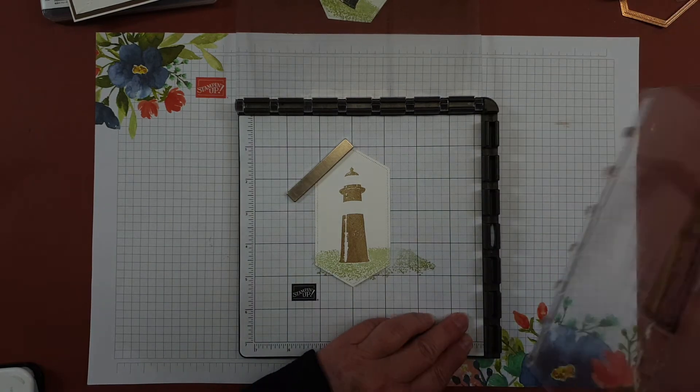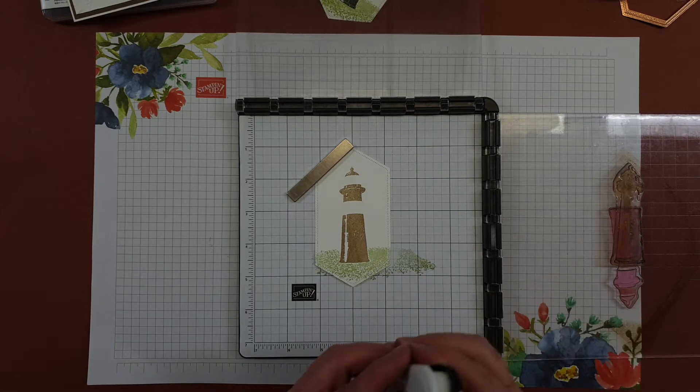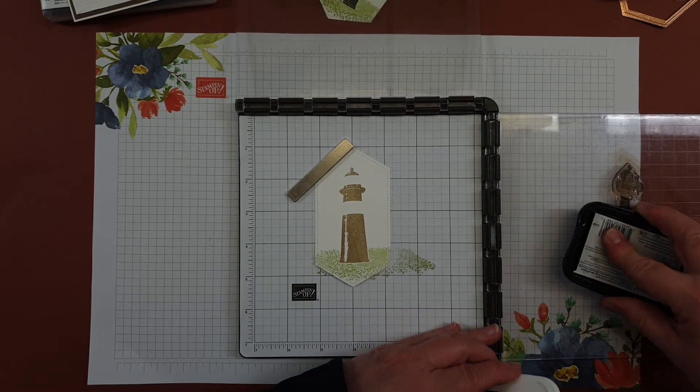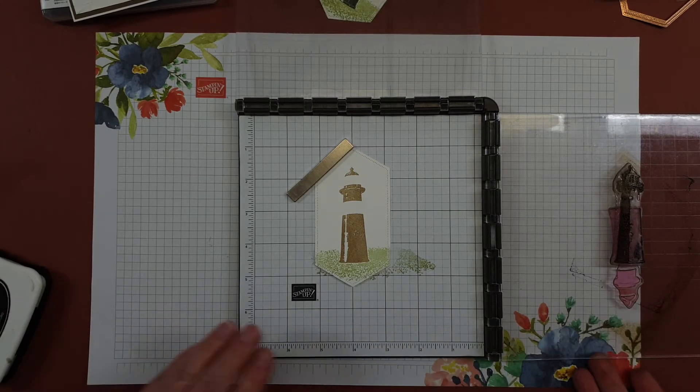So you can see that I'm getting this and then I'm going to lift my hinge and spin it around and on the other image I've got my Memento black and I'm going to ink up the outline of that and stamp again.